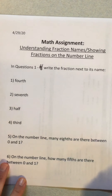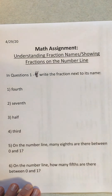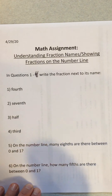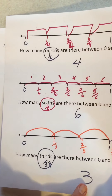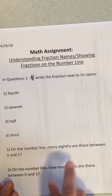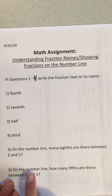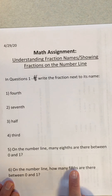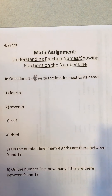Now I want you to write how many are on the number line. How many eighths are there between zero and one? You might know the answer. If you need to draw it you can; if you already know, just write the number. Remember: how many fourths? Four. How many sixths? Six. How many thirds? Three. How many fifths are there between zero and one? That's it for now — see you next time!